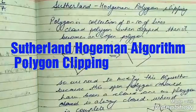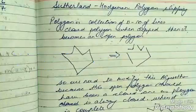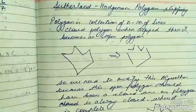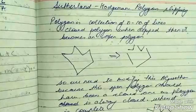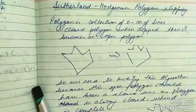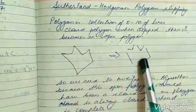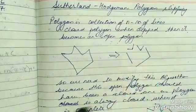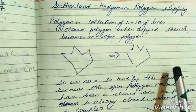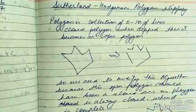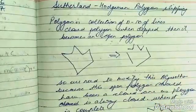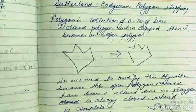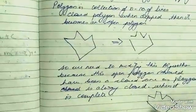As we know, a polygon is a figure with n number of lines and the polygon is always closed. But after clipping, we might end up with something like this which makes an open polygon. So we need to modify this algorithm so that we can get a closed polygon after clipping as well.